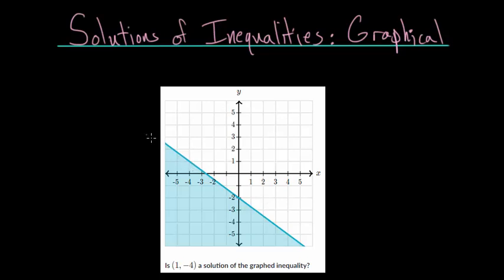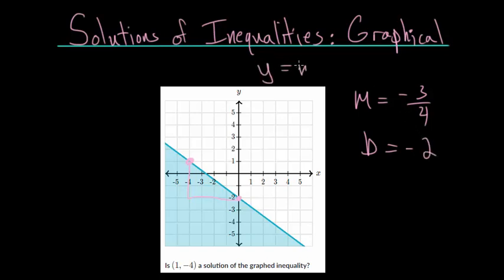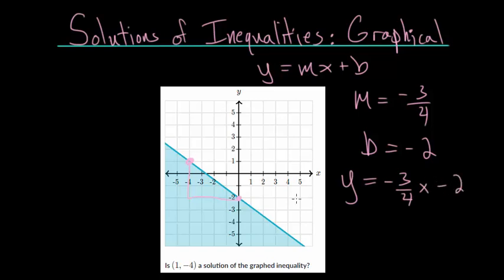So, if you were to find the equation of the line, notice it has a y-intercept of minus 2. And if we found the slope, notice it goes down 3 and over 4, so we can say the slope is minus three-fourths and its y-intercept is minus 2. Comparing it to slope-intercept form y = mx + b, the equation of this line would be y = -¾x - 2. You can verify that by just plugging in points on the line.